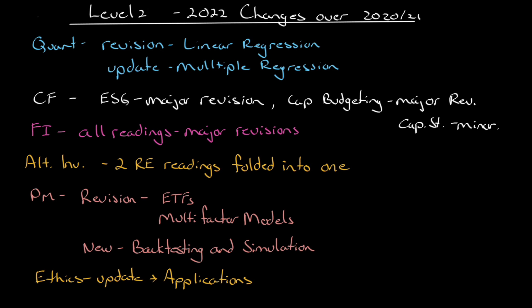Registration has opened for Level 2 for 2022, so we can discuss the changes in 2022 over what we saw over the last two years, 2020 and 2021. For quant, linear regression has had a revision and there has been an update to multiple regression — no new information here, just a different presentation. So if you're using 2020 and 2021 content for those two readings, you should be okay.